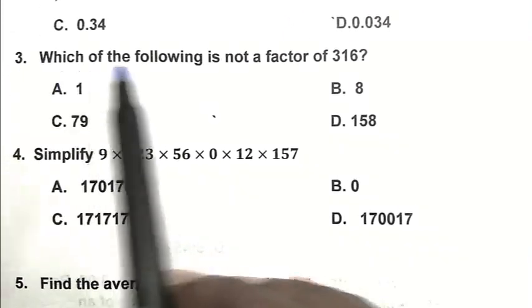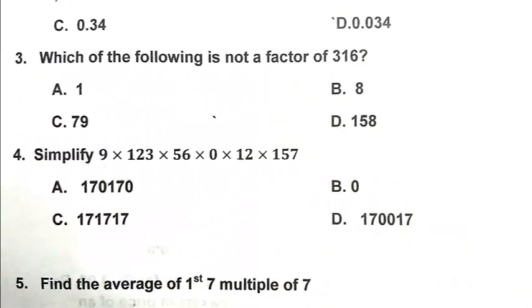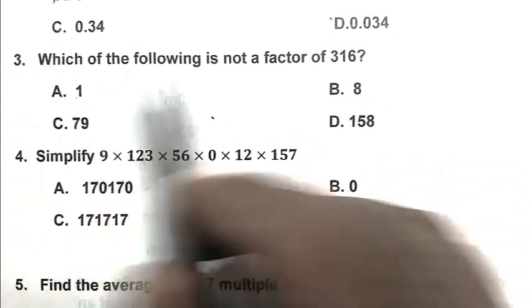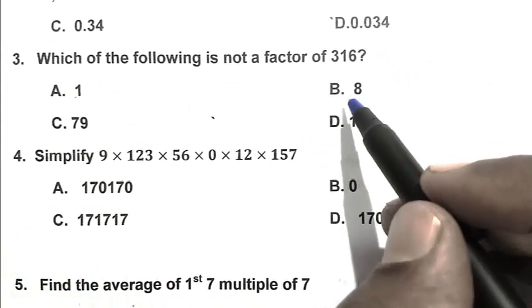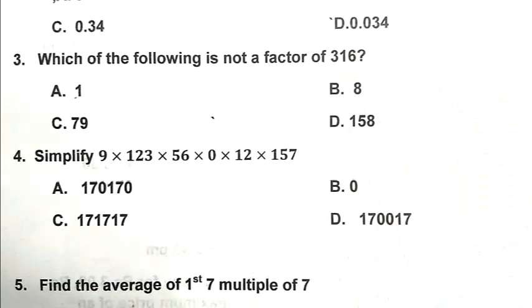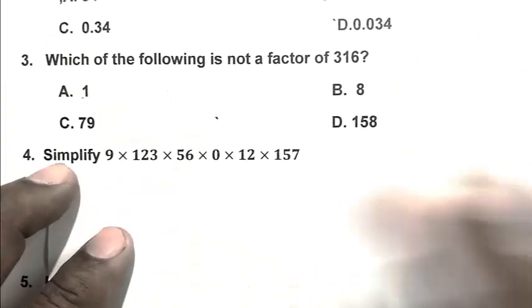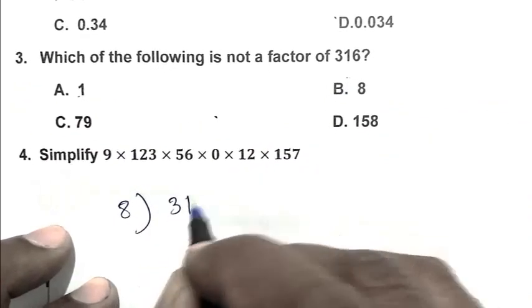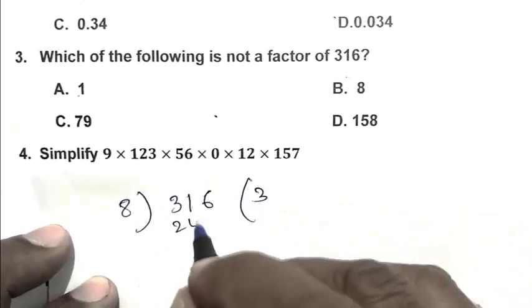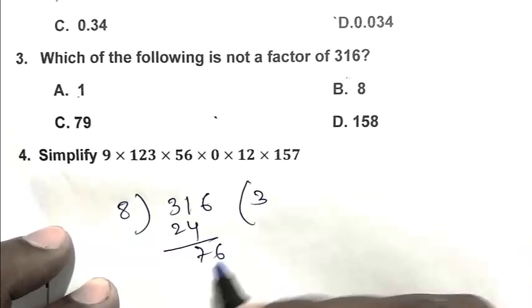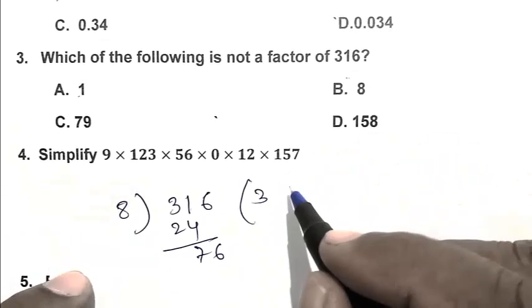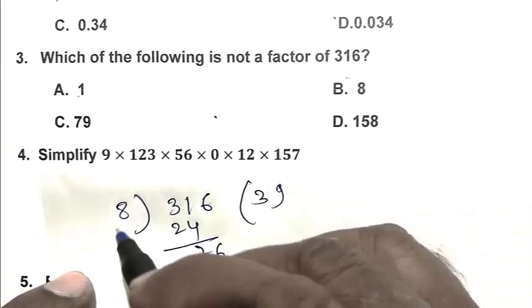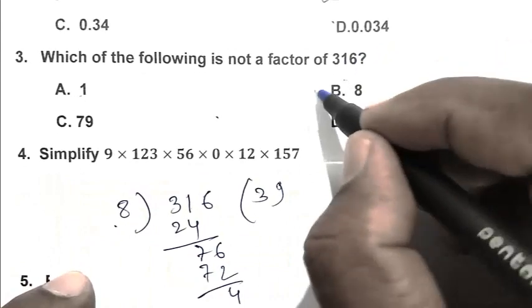Question number 3. Which of the following is not a factor of 316? So friend, A option is 1. So 1 is a factor of 316. And B is 8. So we divide it. So friend, we divide 316 by 8. So 8 is not a factor of 316. B is the right answer.